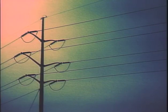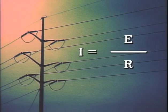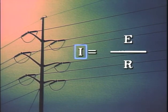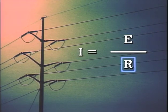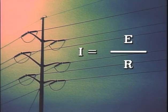Ohm's Law basically states that the current in a circuit is directly proportional to the applied voltage and inversely proportional to the circuit resistance. This means that if resistance is held constant while the voltage in a circuit is increased, current will also increase. On the other hand, if voltage is held constant while resistance is increased, current will decrease. The equation used to express Ohm's Law is I equals E over R, where I represents current in amperes, E represents voltage in volts, and R represents resistance in ohms. In this form, the equation can be used to calculate current in a circuit when voltage and resistance are known.